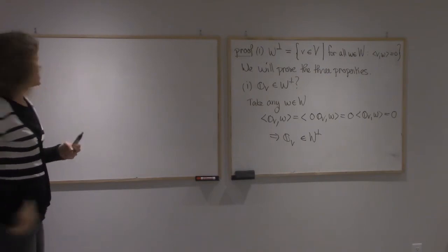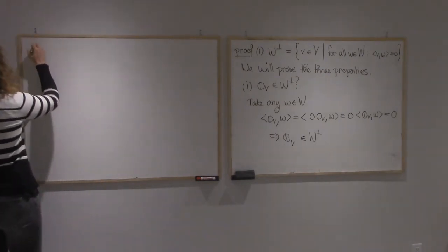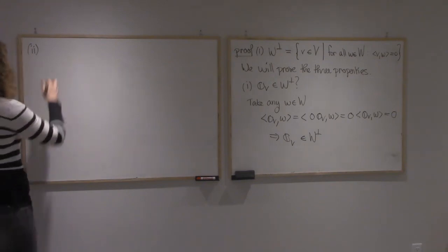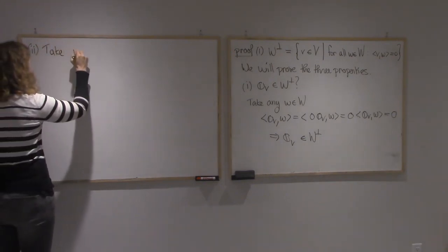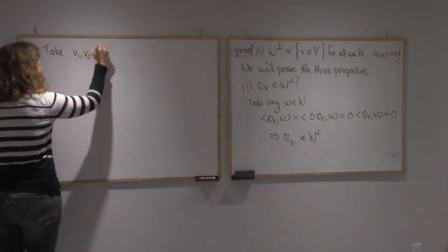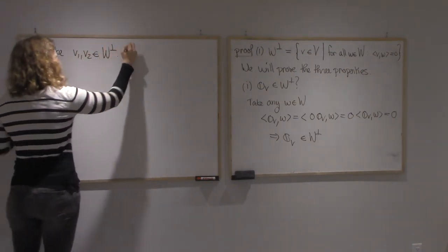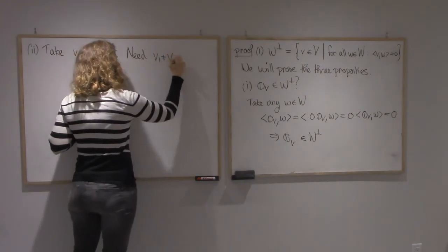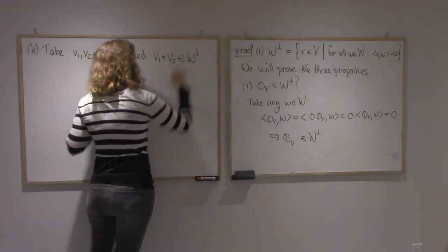Second condition, closed under addition of vectors. So take v1, v2 in W-perp.